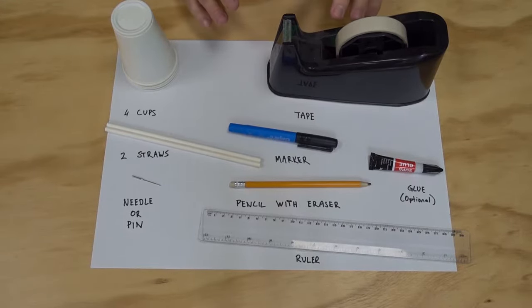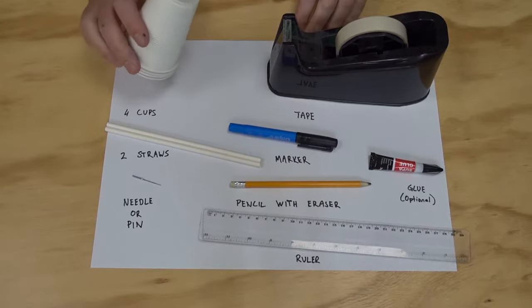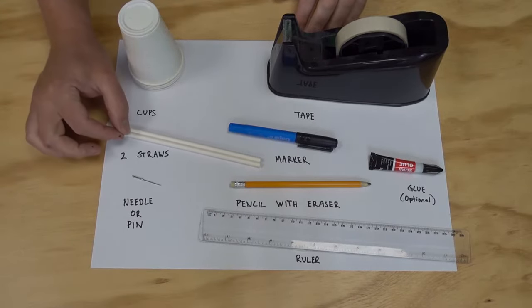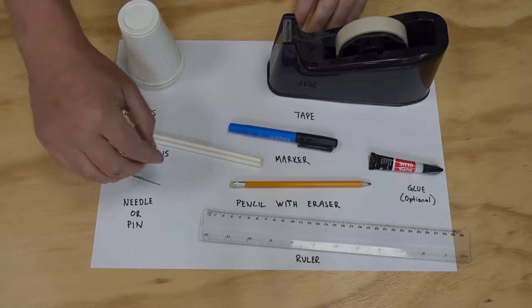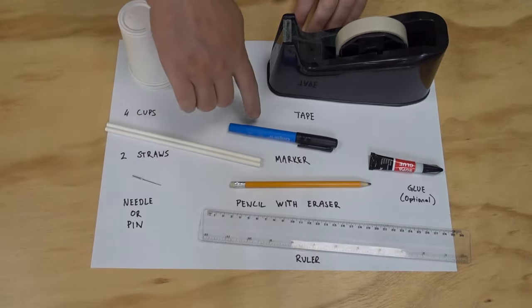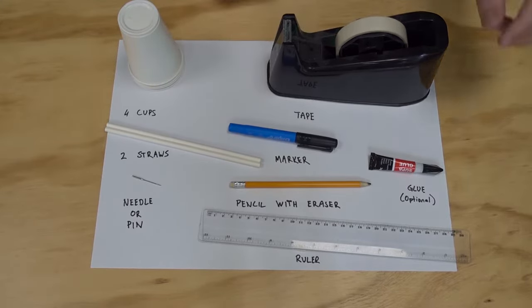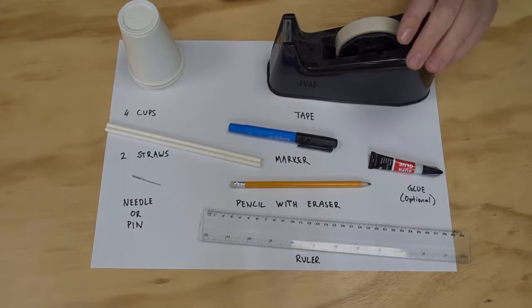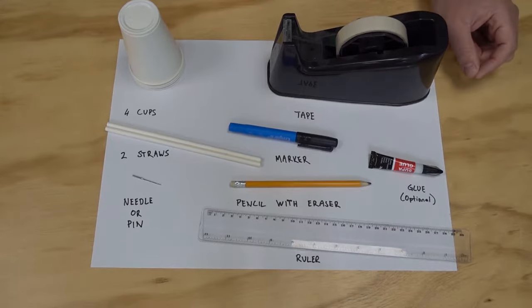To make our anemometer we're going to need four cups that are as light as possible, so paper or plastic. We need two straws and a needle, a pencil with an eraser on the end, a ruler, a marker, and some tape. I'm also going to use a little bit of super glue. This is optional, you can just use the tape instead. I think glue is going to make it a little bit easier for one of the parts.